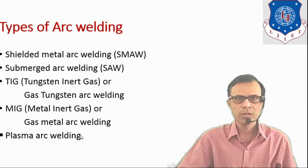There are some types of arc welding. These types are shielded metal arc welding, submerged arc welding, TIG welding, that is tungsten inert gas welding, MIG welding, that is metal inert gas welding, and plasma arc welding. Among these types, in this session we will discuss two types: shielded metal arc welding and submerged arc welding.